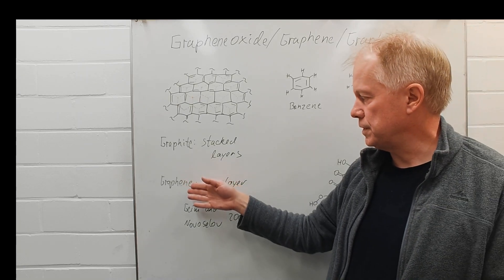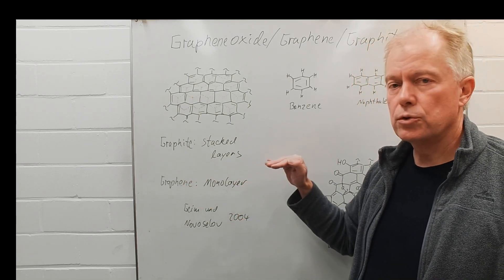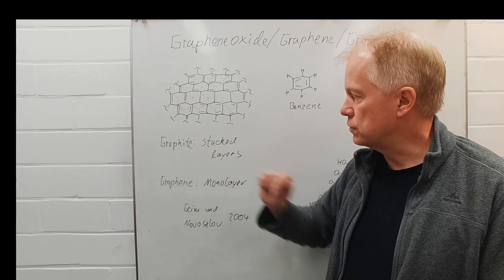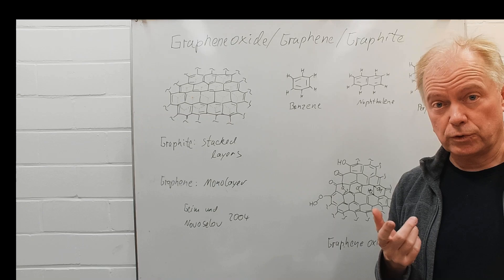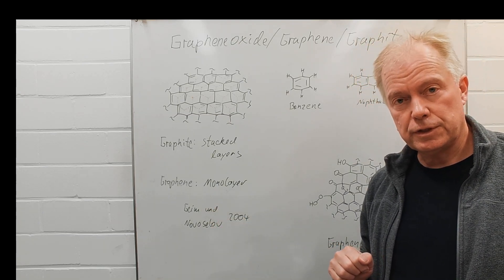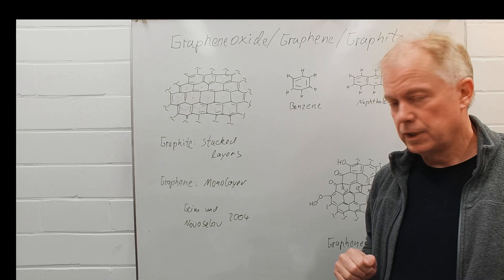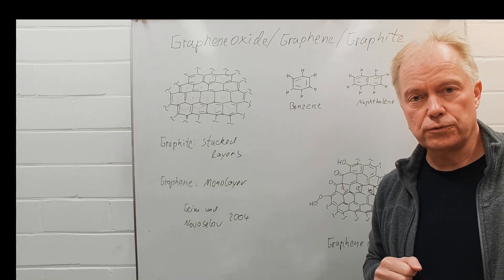What is graphene? Graphene sheets are monolayers of graphite and the first to isolate those were the researchers Geim and Novoselov in the year 2004. They won the Nobel Prize then in 2010.